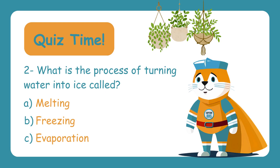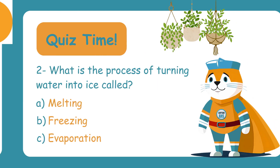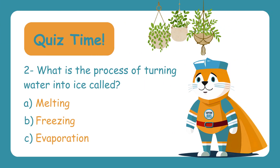What is the process of turning water into ice called? A, melting! B, freezing! C, evaporation! The process of turning water into ice is called B — freezing! When the temperature drops, water molecules slow down and form solid ice.